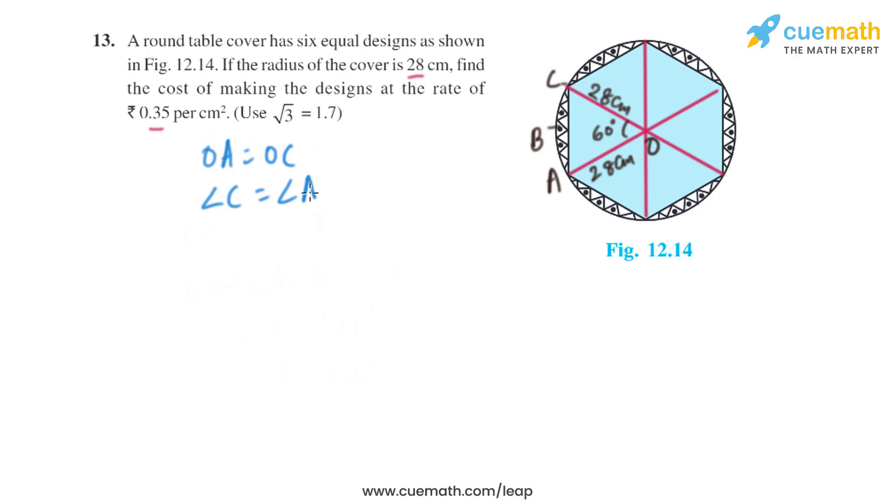We also know that OA equals OC, that is the radius, which means angle C equals angle A. Let's take it as x. So it will become x plus x plus 60 degrees equals 180 degrees, that is the sum of all interior angles of a triangle. From here we'll get the value of 2x as 120 degrees and x as 60 degrees, which means all the angles of triangle OAC are 60 degrees, which means it is an equilateral triangle.